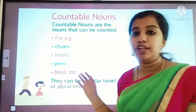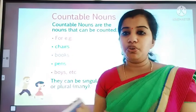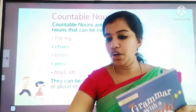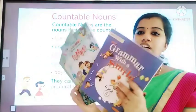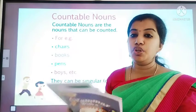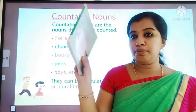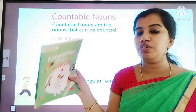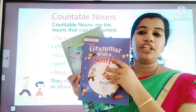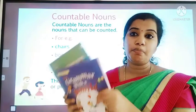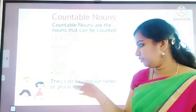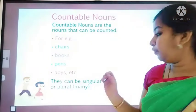Countable nouns can be singular or plural. For example: this is a book — that is a singular noun. Here are three books: one, two, three. You have to say 'three books.' So for countable nouns, they can be singular or plural.